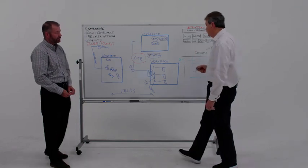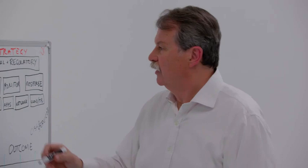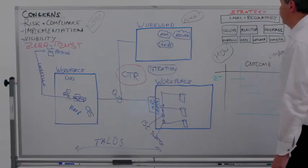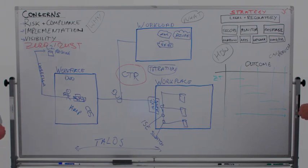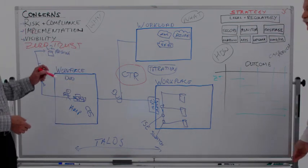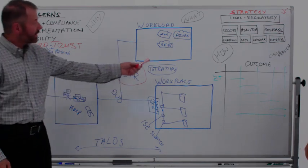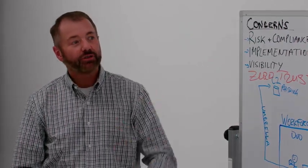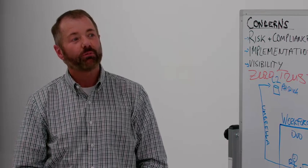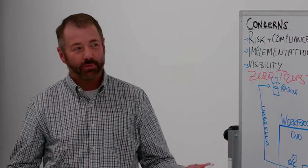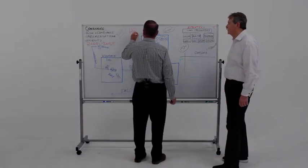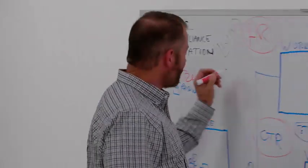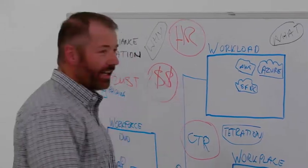So we've given them the what, how, and why. We've talked about the buckets — workforce, workplace, workload — and people can name these differently. Two pieces of critical information we provide tremendous value on: the HR issue, specifically the staffing challenge, and the cost issue. CISOs don't have an endless checkbook.